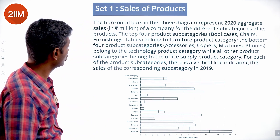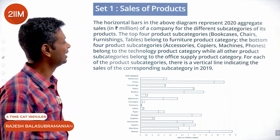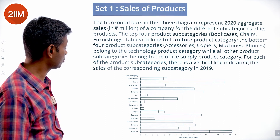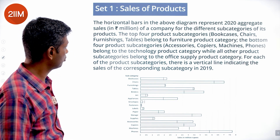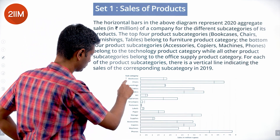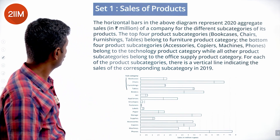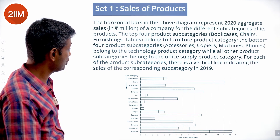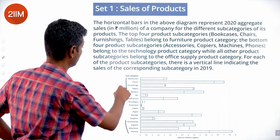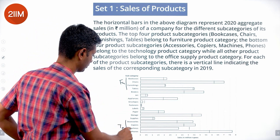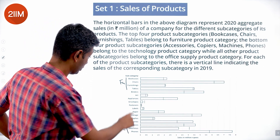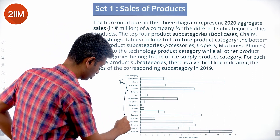The horizontal bars in the diagram represent 2020 aggregate sales in rupees million of a company for different subcategories. The top four subcategories — bookcases, chairs, furnishings, and tables — belong to the furniture product category. The bottom four subcategories — accessories, copiers, machines, and phones — belong to the technology product category. All other subcategories from binders to supplies belong to the office supply product category.